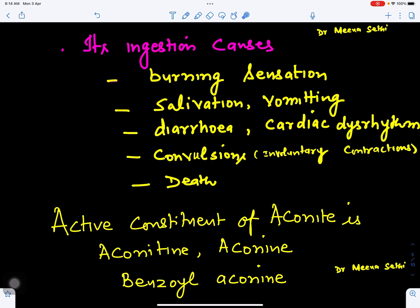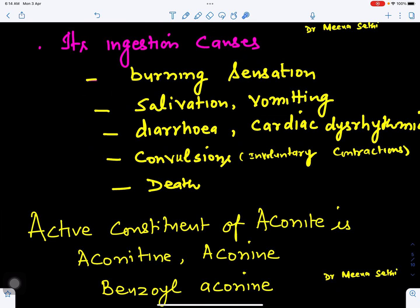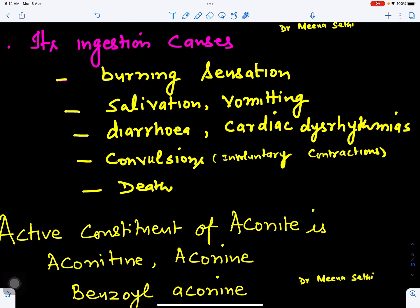If ingested — because this plant is poisonous — it may cause burning sensation, salivation and vomiting, diarrhea, cardiac dysrhythmias affecting the heart, convulsions which are involuntary contractions, and epilepsy. If a larger dose is ingested over time, it may lead to the death of the organism. If its infusion is introduced into blood or skin, it will also affect breathing, cause weakness, paralytic attack, and even death.